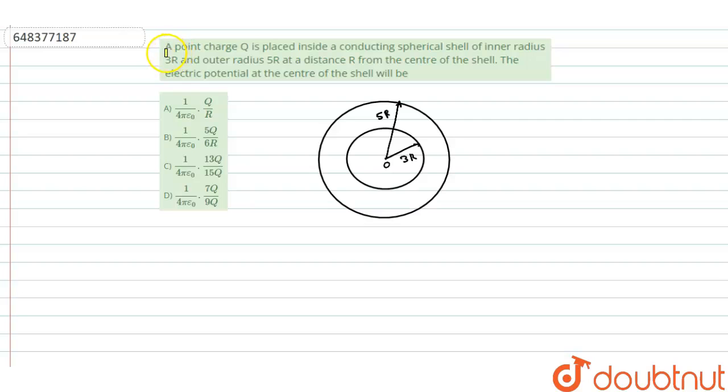Hello everyone, let's start the question. The question says: a point charge Q is placed inside a conducting spherical shell of inner radius 3r and outer radius 5r at a distance r from the center of the shell.